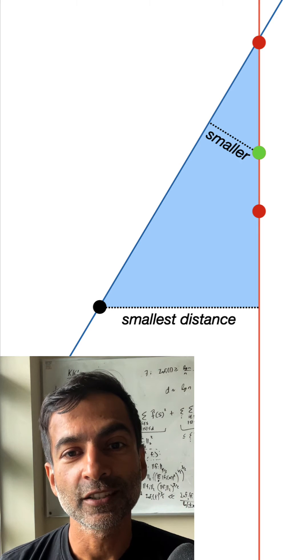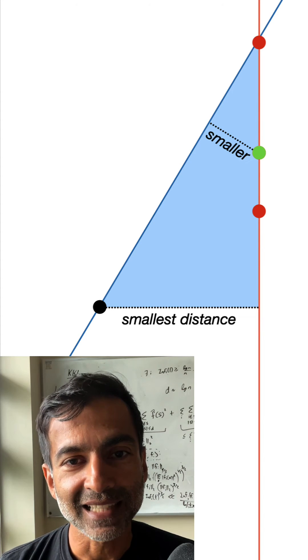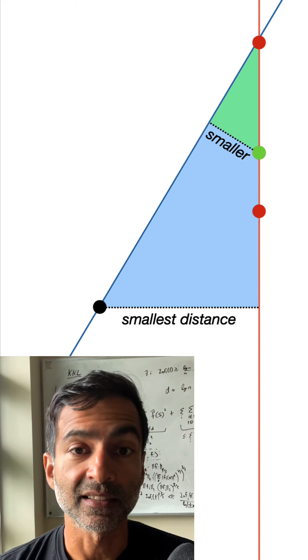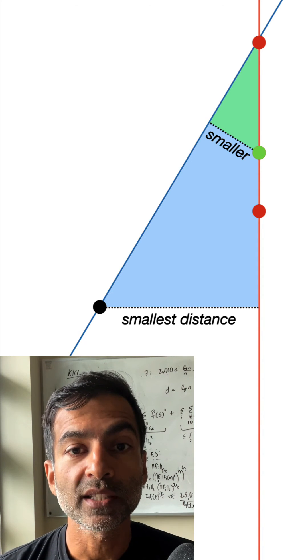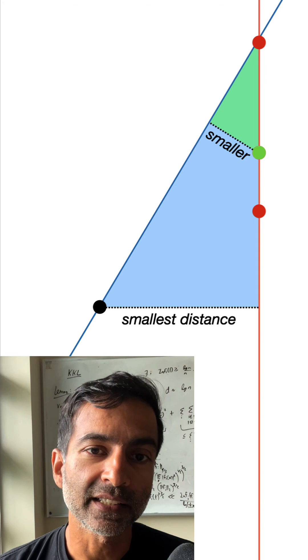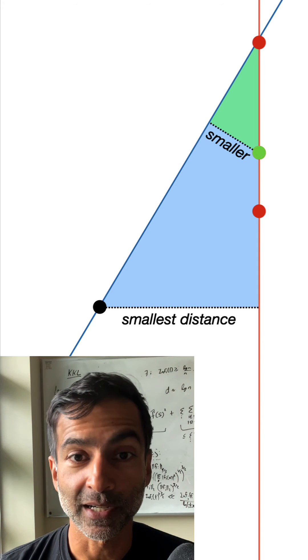That's because this blue triangle has exactly the same shape as this green triangle. But the green triangle is smaller. And that's why the green point is closer to the blue line than the black point is to the red line.